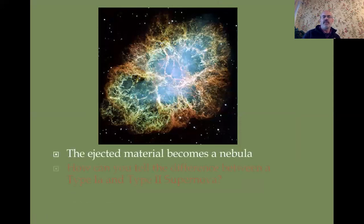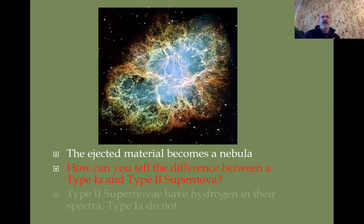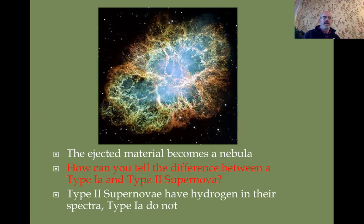The ejected material becomes a nebula. You can tell the difference between a Type 1a and a Type 2 supernova because Type 2 will have hydrogen in its spectrum. Recall that a Type 1a supernova is essentially the explosion of carbon — no hydrogen — whereas in Type 2 you still have hydrogen present, so hydrogen lines are visible in the spectrum.